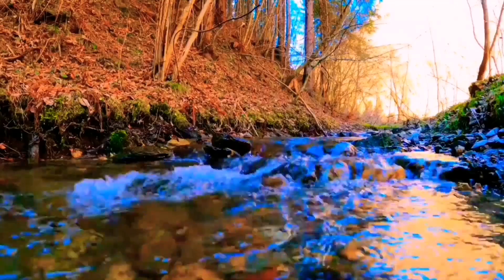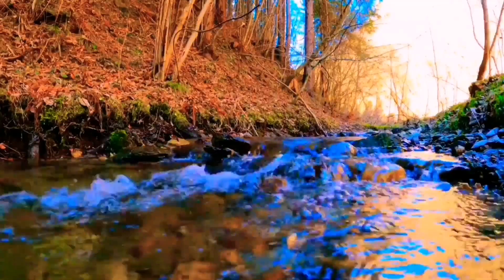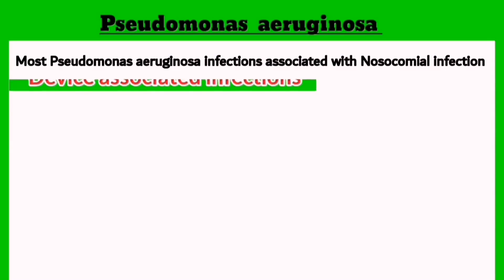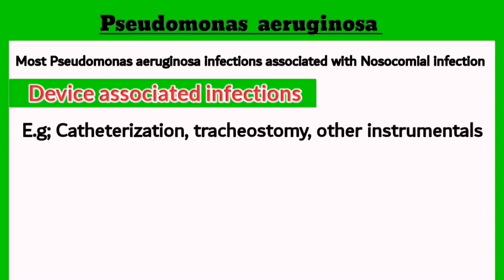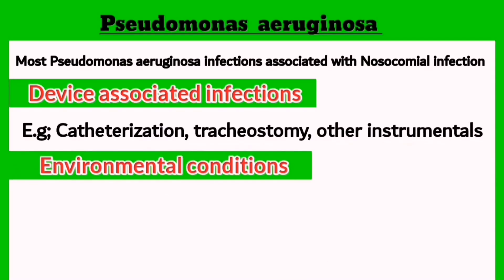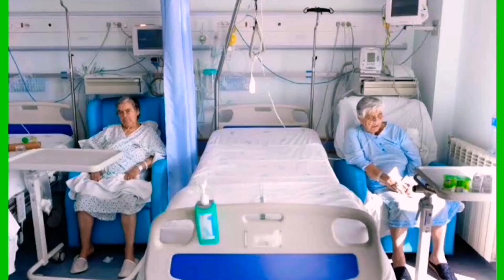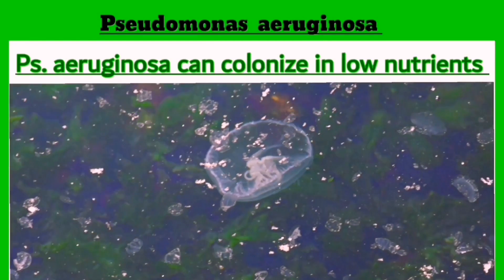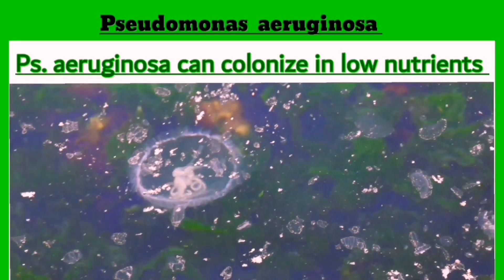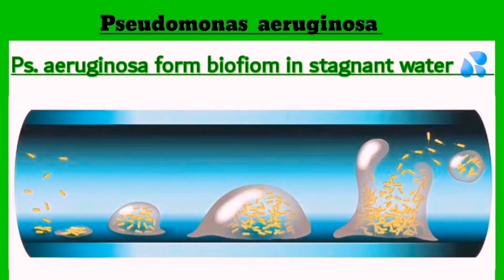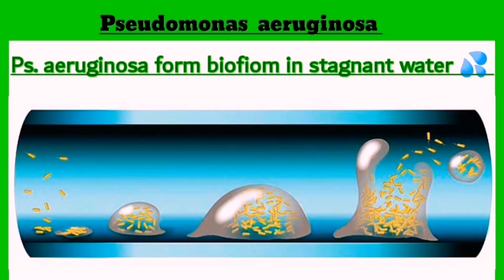Pseudomonas aeruginosa is fundamentally present in the environment, which helps it to cause nosocomial infections. This occurs either by device-associated infections through hospital instruments such as catheterisation or tracheostomy, or by environmental conditions such as high humidity or inefficient air conditioner filters. It doesn't require nutritional elements for growth, so it can easily survive in any stagnant water, in foods or in factory water pipes, leading to the production of biofilms on these surfaces, which can help to disperse the bacteria to other areas.